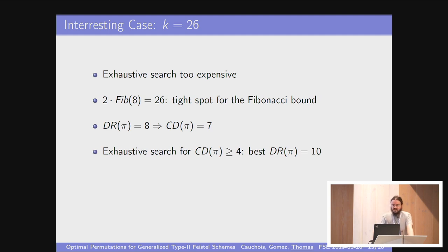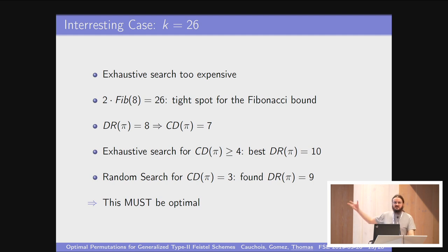We can actually test if such a thing exists using exhaustive search. We performed exhaustive search for any permutation with a collision-free depth at least 4. The best result we found was 10. So this proves that the best permutation cannot have a diffusion round of 8. It must be either 9 or 10. We transformed our algorithm to perform random search using collision-free depth of 3, which was the biggest value we had not tested yet, and found one result with 9, which is then optimal. This means the collision-free depth is indeed a useful criterion for finding permutations.